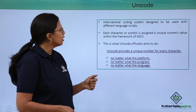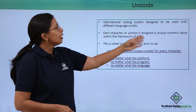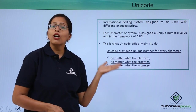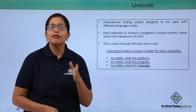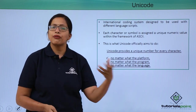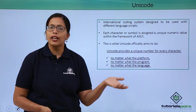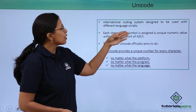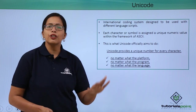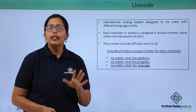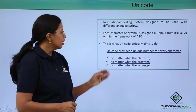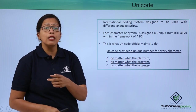What essentially is Unicode? It is an international coding system designed to be used with different language scripts. Using Unicode, you can have alphanumeric code for your own language as well as foreign languages like Spanish, French, German, Chinese, Mandarin, and others. Each character or symbol is assigned a unique numeric value within the framework of ASCII — meaning ASCII has simply been expanded so that other languages can be included. This is what Unicode officially aims to do.